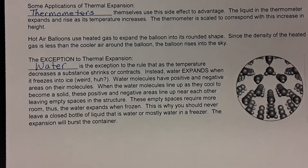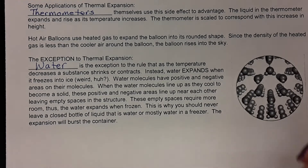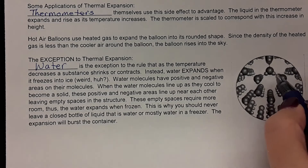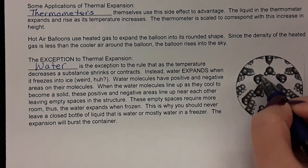Ice expands when it freezes, and when it melts from ice to liquid water it contracts. That's because water molecules have positive areas and negative areas. You can't see it well on these pictures, but the little molecules — the little hydrogens — they are negative.